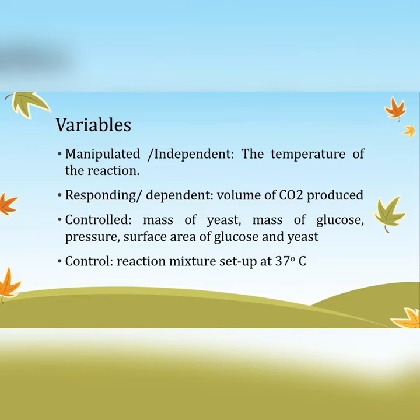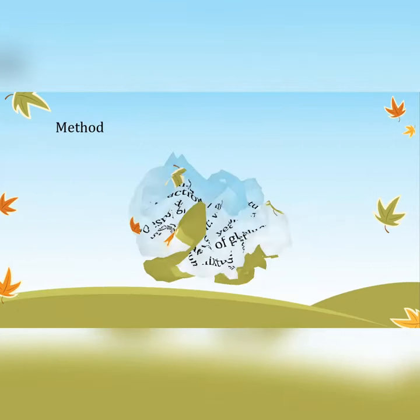For the control: since enzymatic activity belongs to the biological sciences, when doing a biological science lab you want a control to compare results against. We set up a reaction mixture at 37 degrees Celsius. We choose 37°C because we have knowledge that enzymes work nominally at that temperature, so we use it as a comparison baseline.